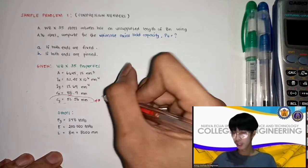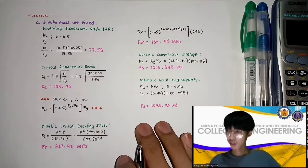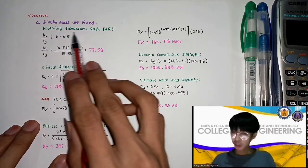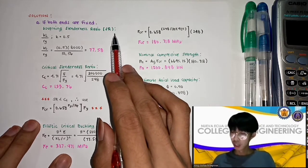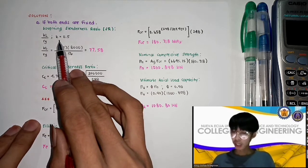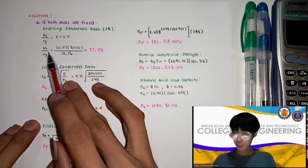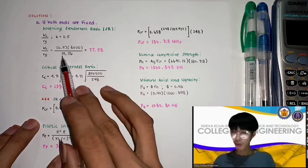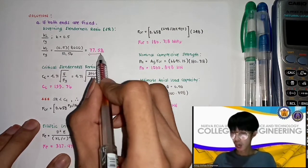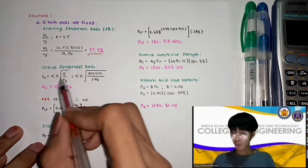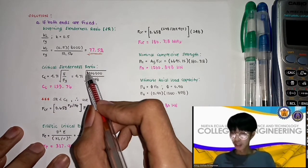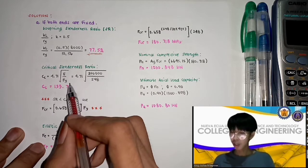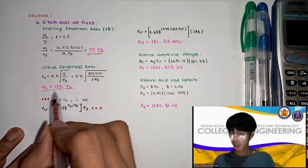For our solution, letter A — both ends are fixed. We get the governing slenderness ratio: SR = KL/R_Y, where K for fixed ends is equal to 0.5. Substituting: KL/R_Y = 0.5 × 8,000 / 51.56, giving a slenderness ratio of 77.58. Next, we compute the critical slenderness ratio: CC = 4.71 × √(E/F_Y). Substituting the values, the critical slenderness ratio is 133.76.